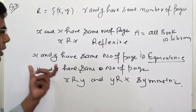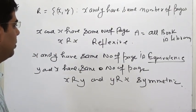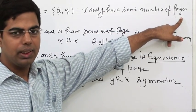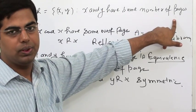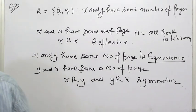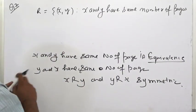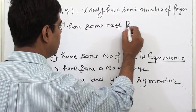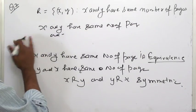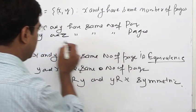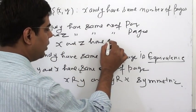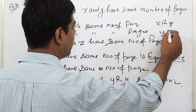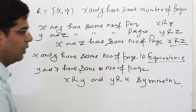Here we can write that X and Y have the same number of pages, and Y and Z have the same number of pages. Very easily we can write that Y and Y have the same number of pages, and Y and Z are the same number of pages. Here we can see that X and Z have the same number of pages. X related to Y, Y related to Z, X related to Z. Transitive.